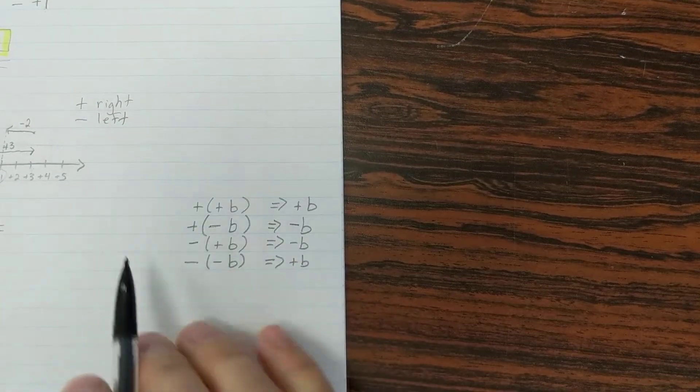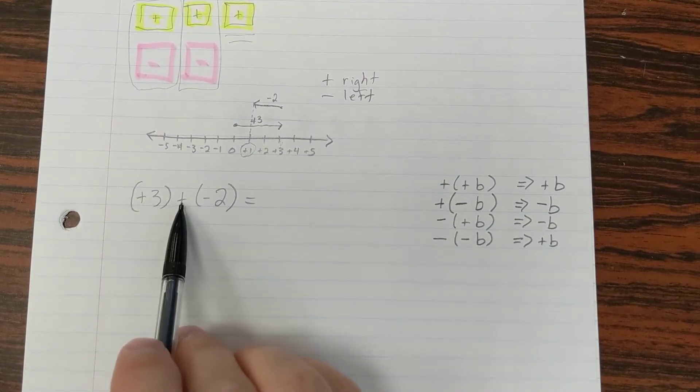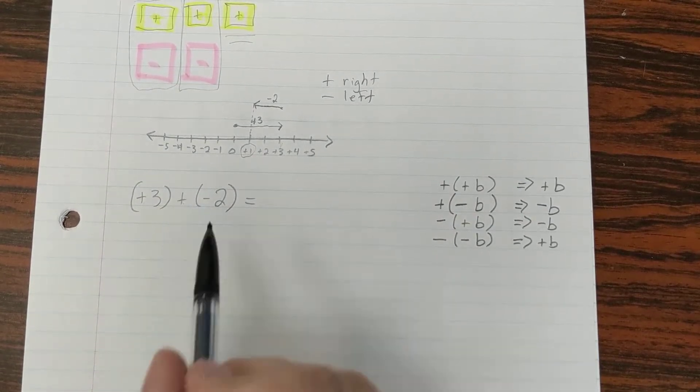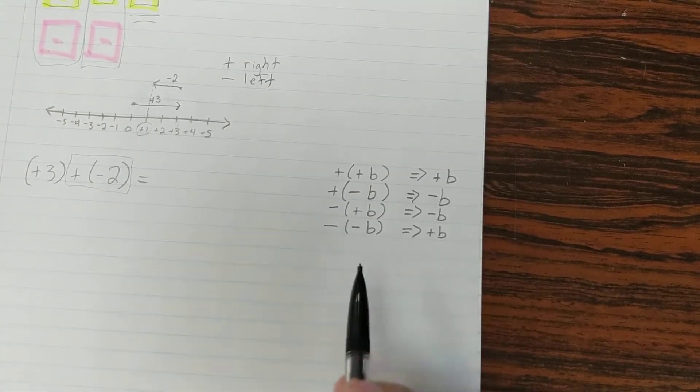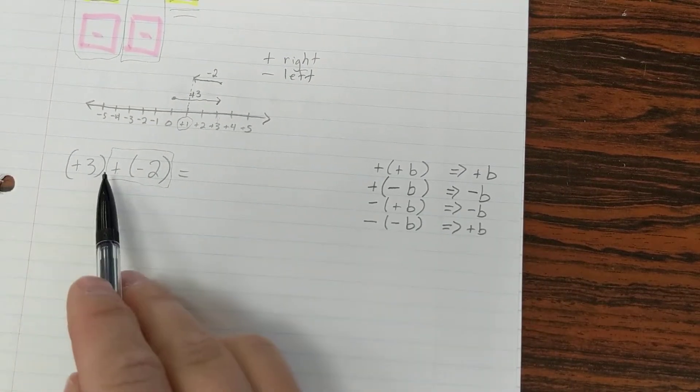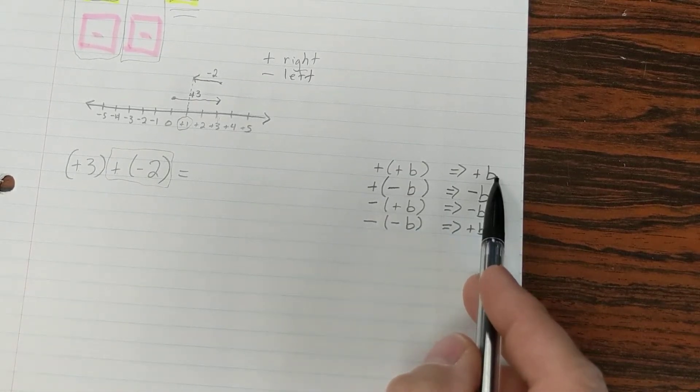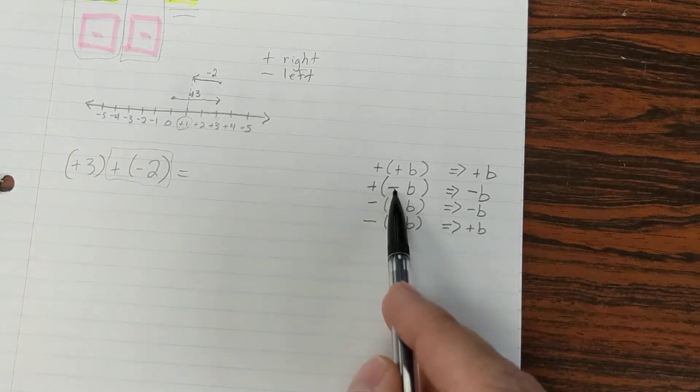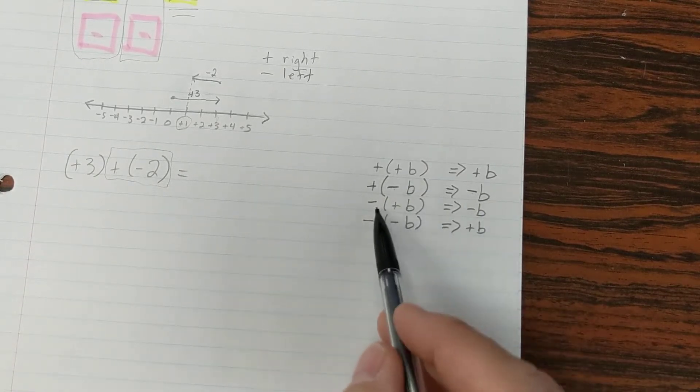So we've got this here. We've got 3, positive 3, plus negative 2. Notice this part right here, this plus a negative, that's what I'm referring to over here. If you ever have a plus, a positive, it's just as if you've added it. If you have a plus and negative, it's like you've subtracted that number, the variable B.